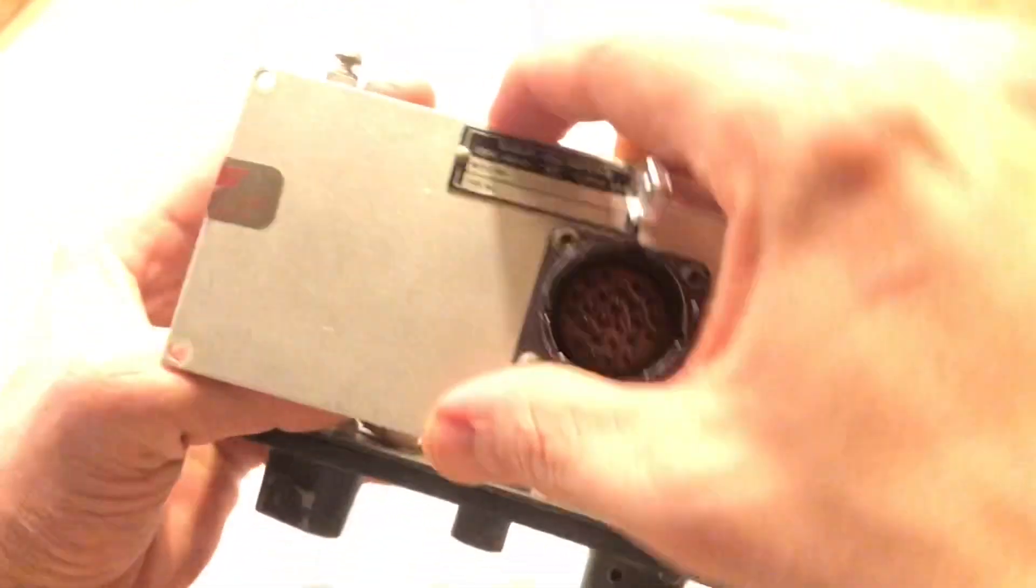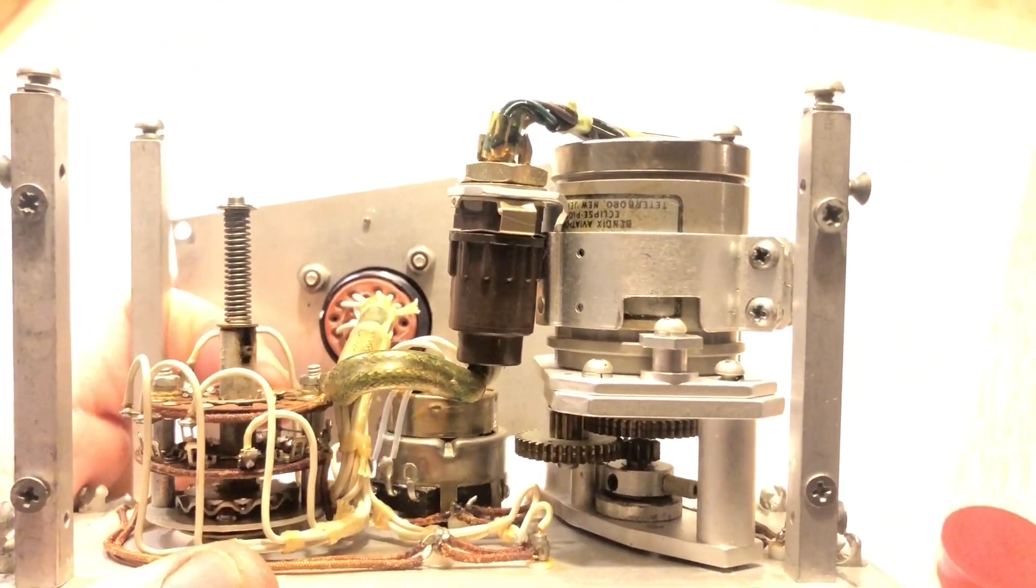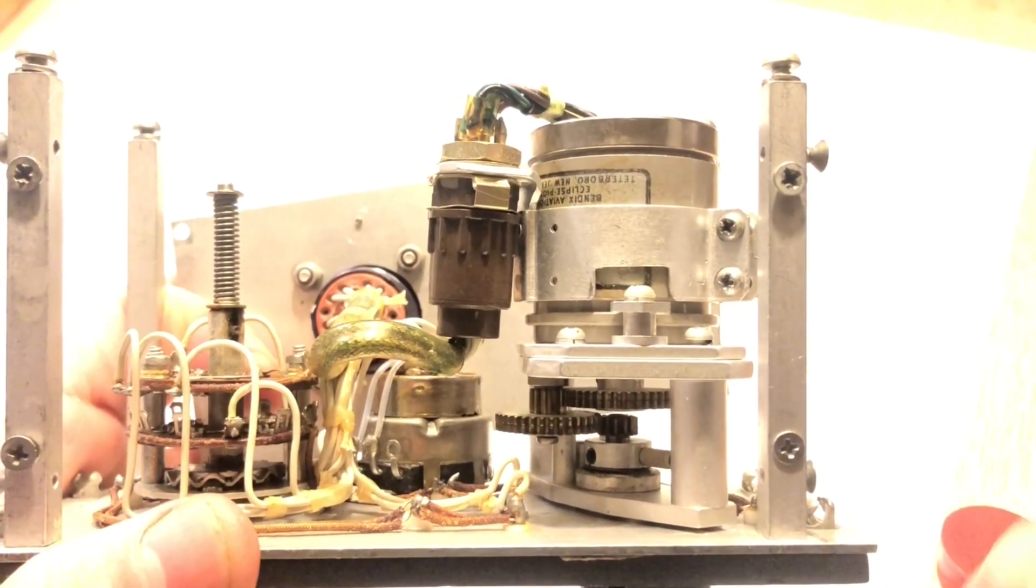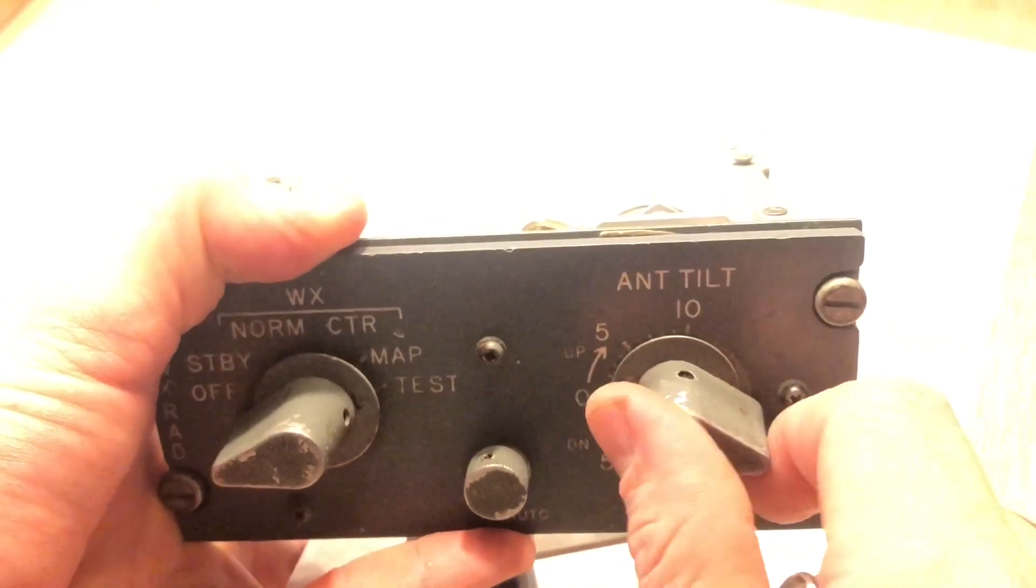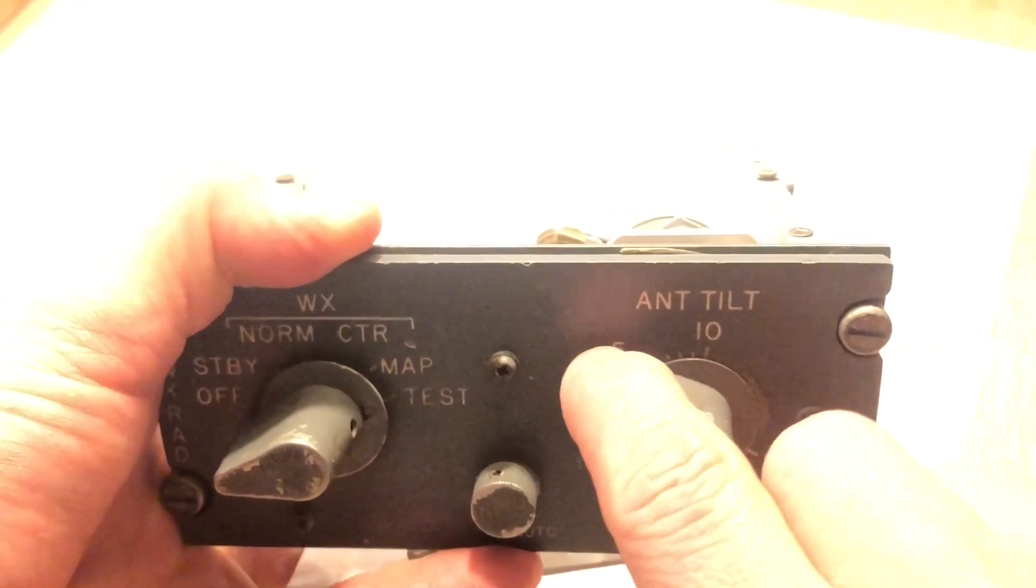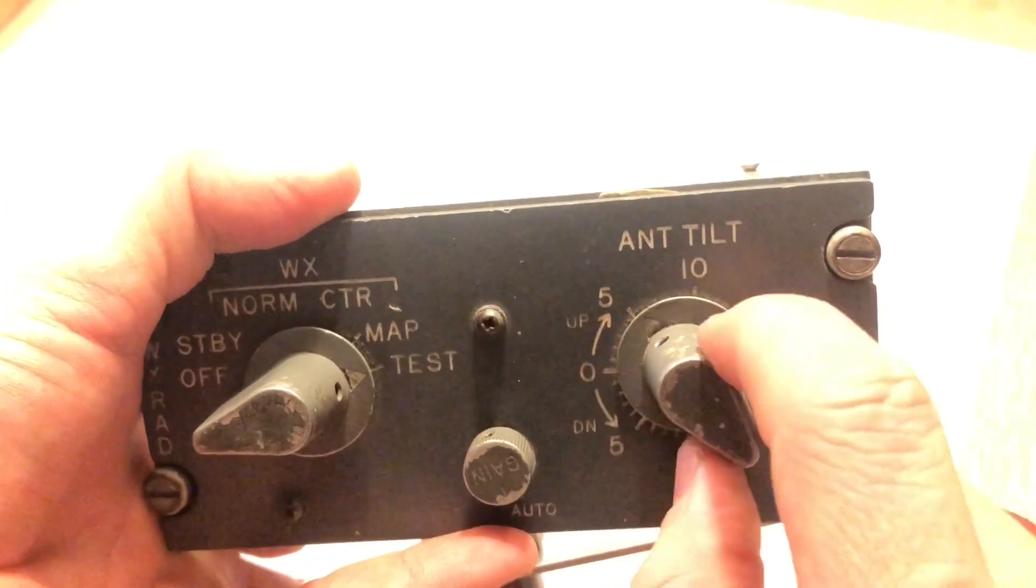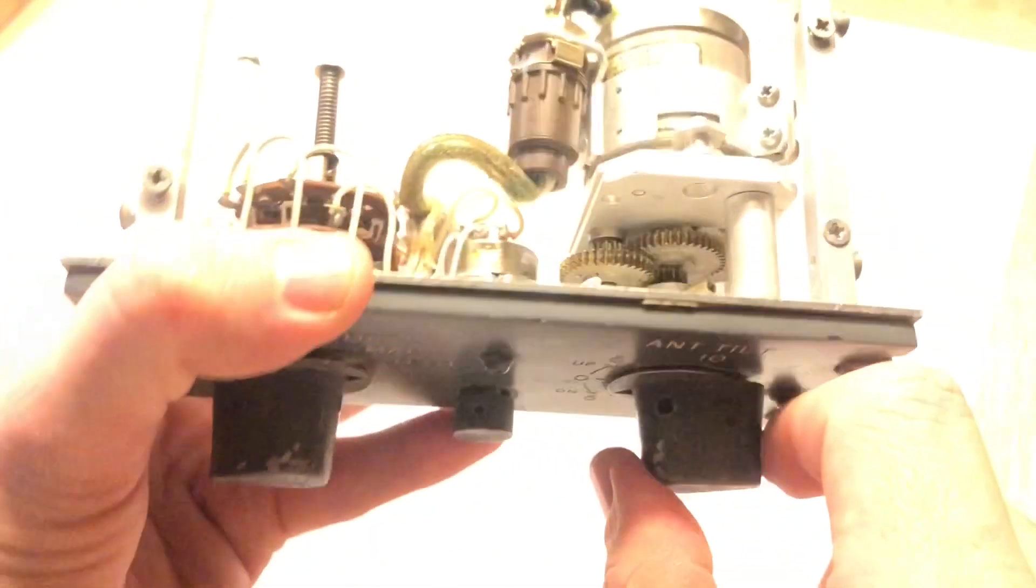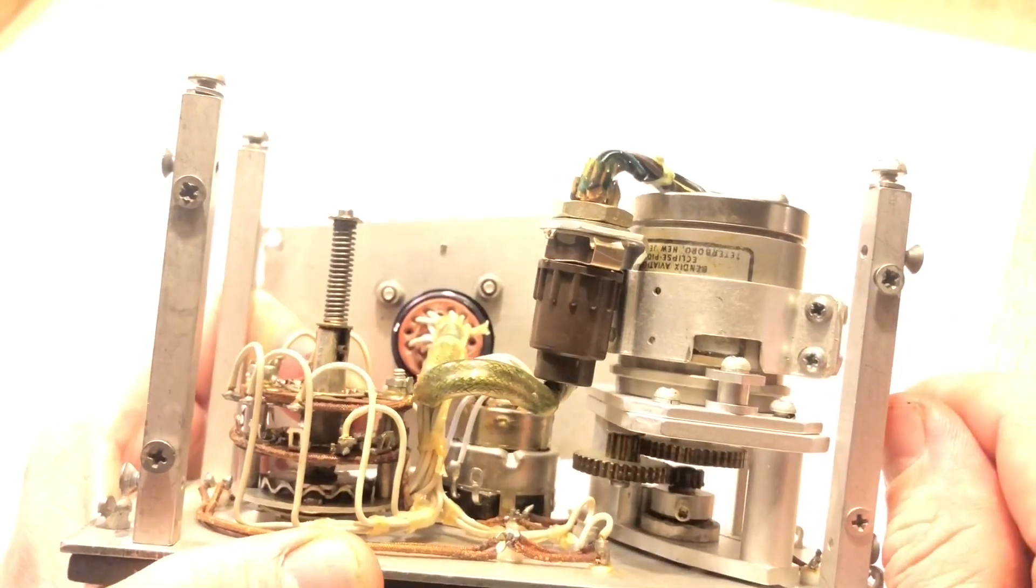This looks like a motor to me. I'm just wondering what is a motor doing on this antenna tilt selector. At least I was not aware that this is able to turn on itself by command from the aircraft, but it appears so when you have a stepper motor or some sort of motor here.